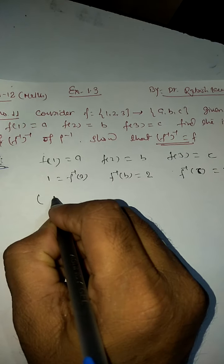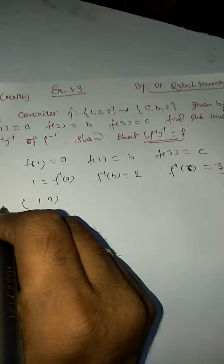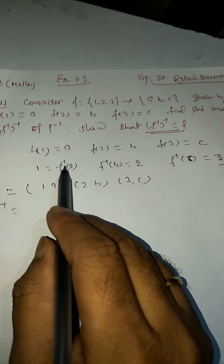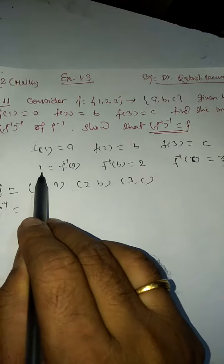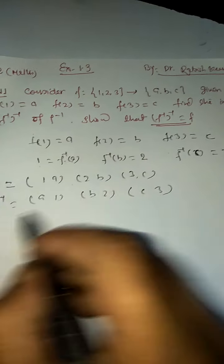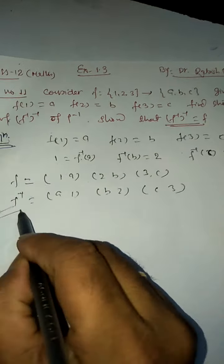The order pairs we have given are (1,a), (2,b), and (3,c). When we find f inverse, we will see f inverse(a) = 1, f inverse(b) = 2, and f inverse(c) = 3. So this is the f inverse.